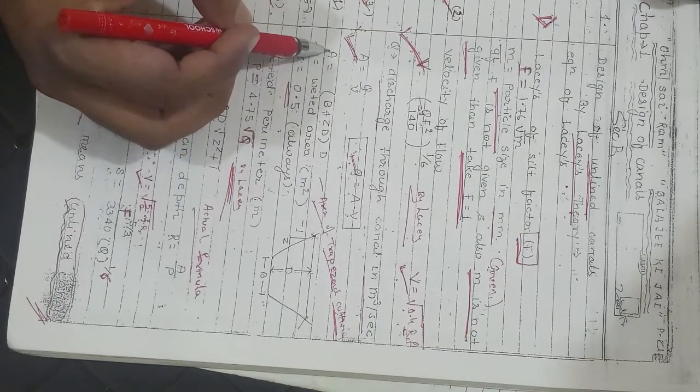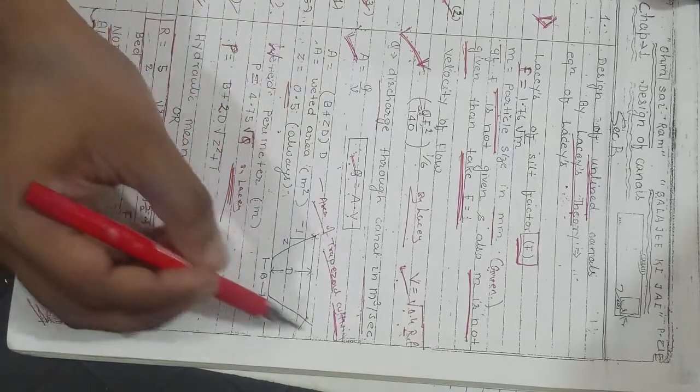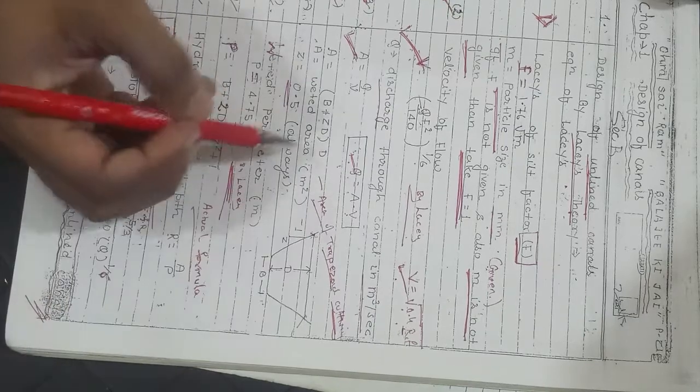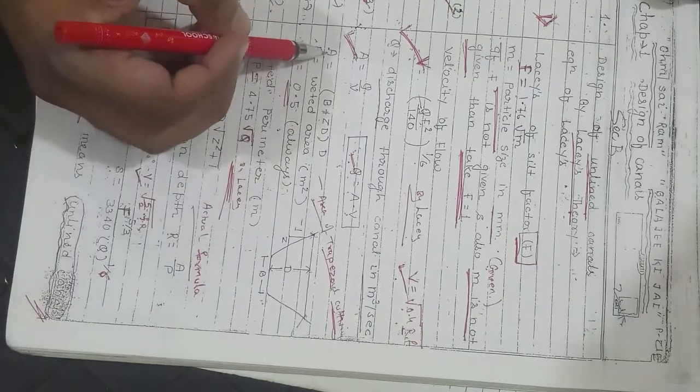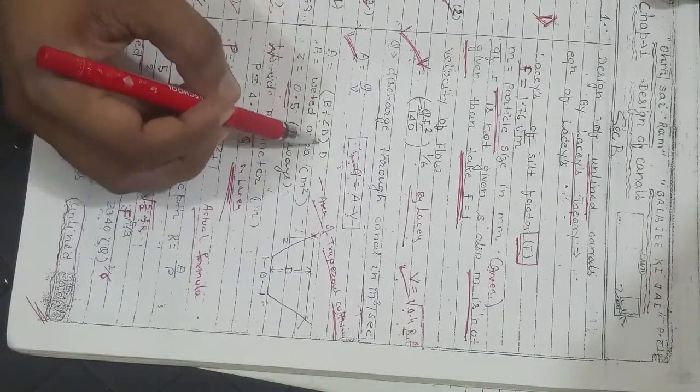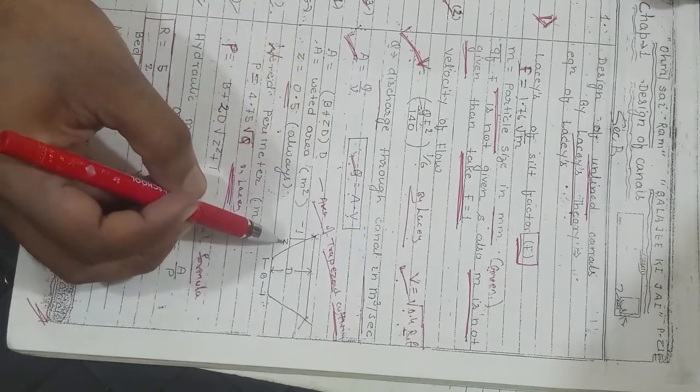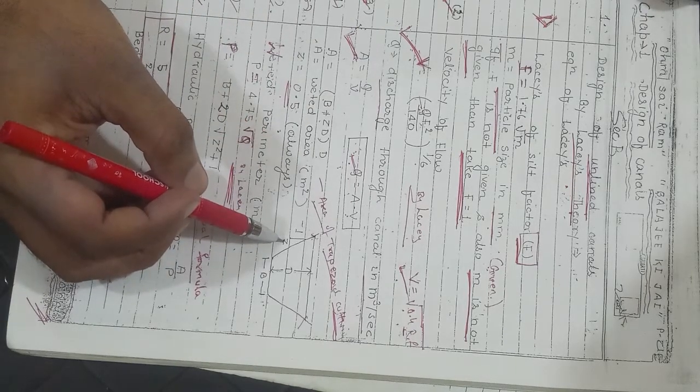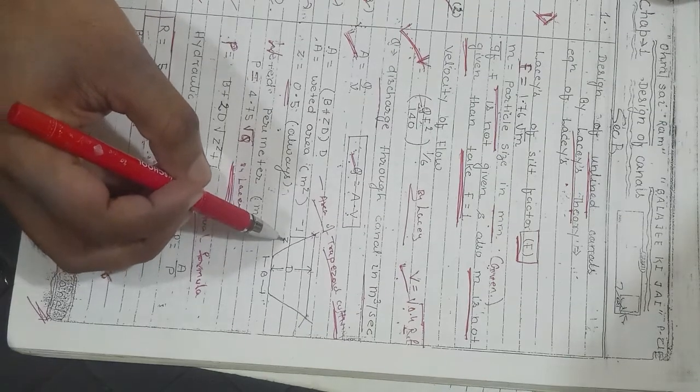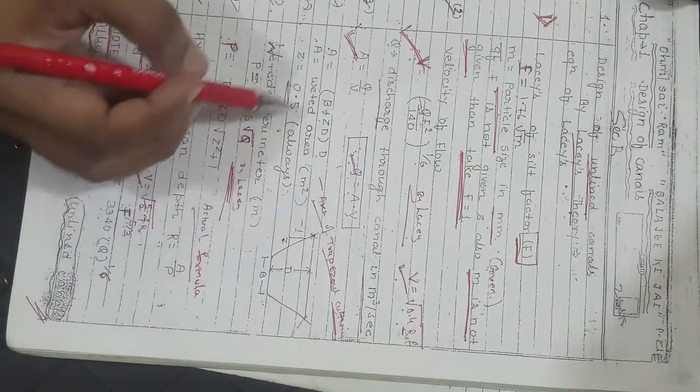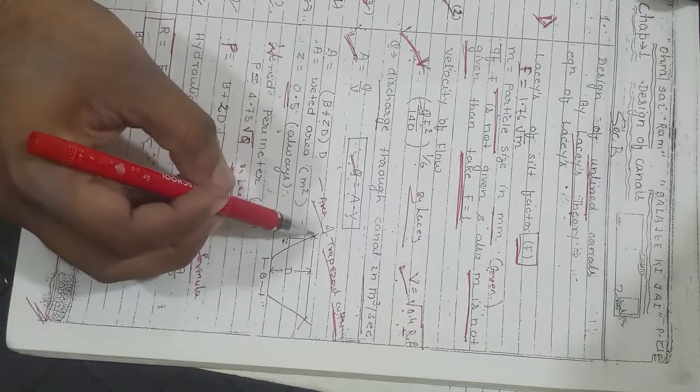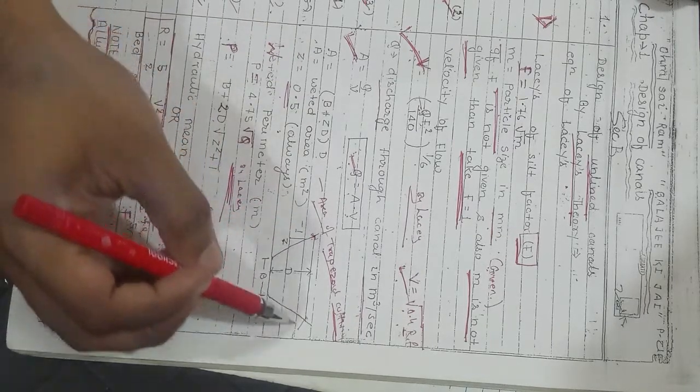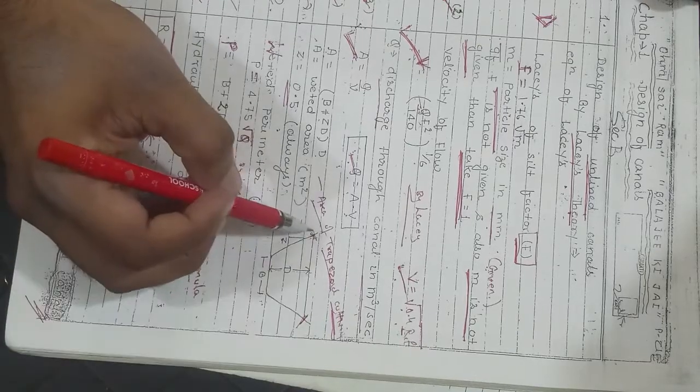Area of trapezoidal cutting—since canal is nothing but a trapezoidal cutting. The formula for area will be (B + zD) × D, where z is the horizontal component of side slope.